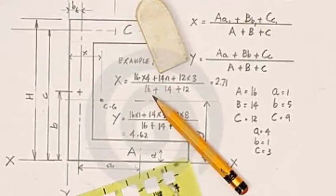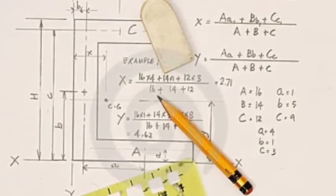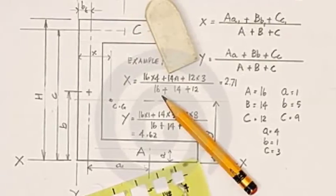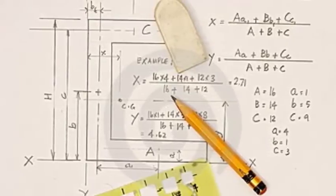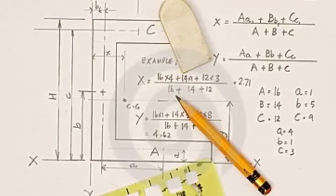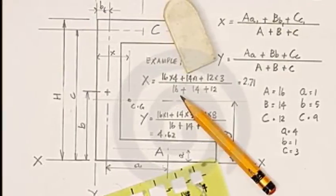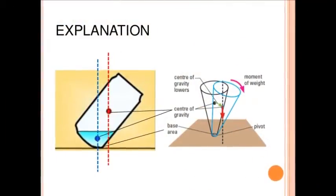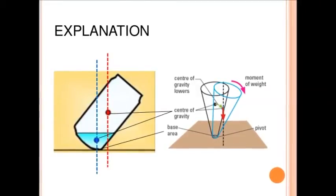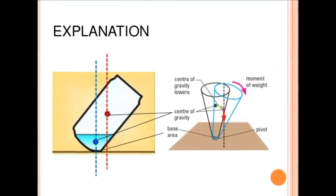Divide the total moment by the total weight. This will give you the distance from the datum to the center of gravity of the object. To do this, simply divide 1,180 feet by pound by 130 pounds. 1,180 feet by pound divided by 130 pounds equals 9.08 feet.